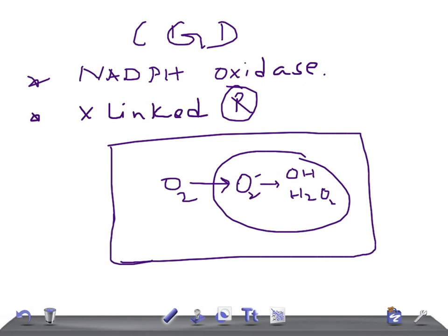The patient with CGD lacks the NADPH oxidase enzyme. NADPH oxidase reduces oxygen to superoxide anions, which further generates hydroxyl radical and hydrogen peroxide — and both of these are microbicidal.